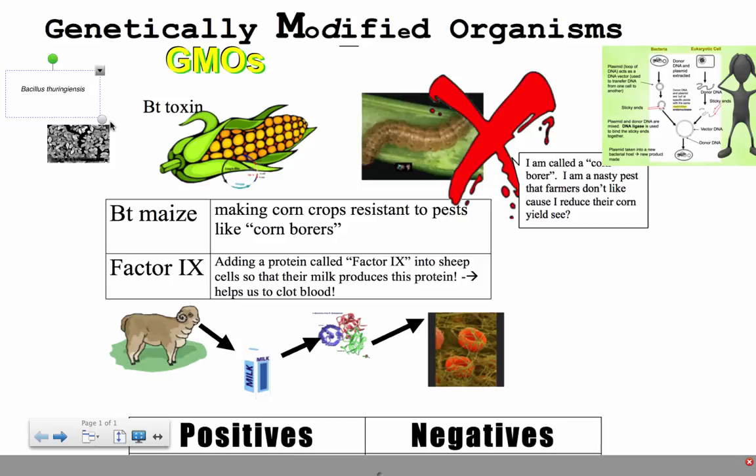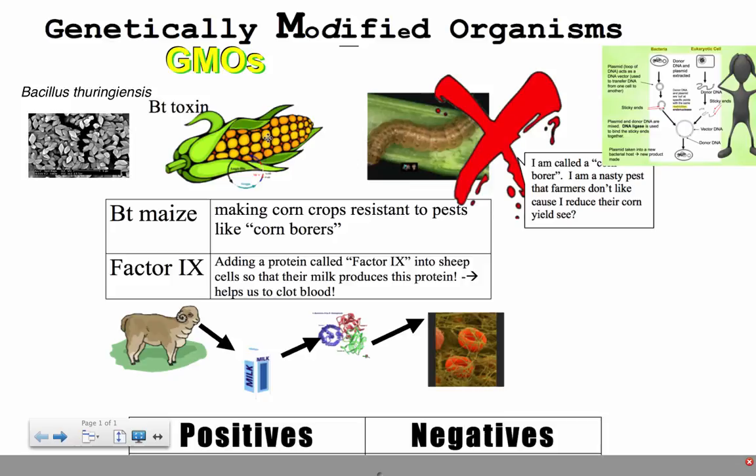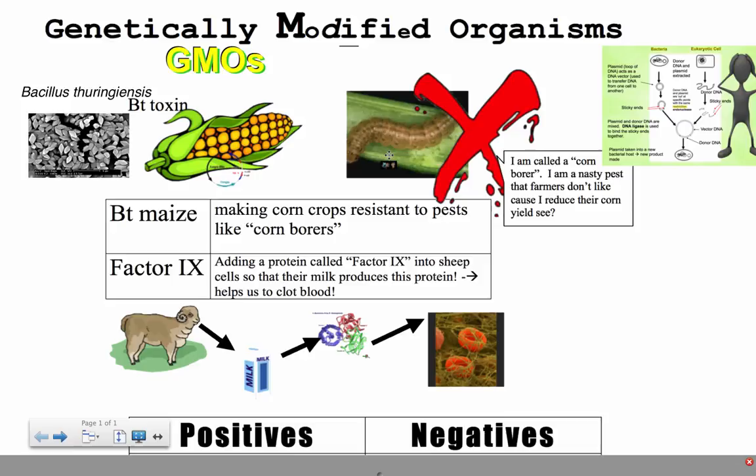Here's a picture of some of the BT spores that are actually produced. What happens is we genetically modify the corn by inserting a gene from bacteria into the corn, and then the corn transcribes and translates that BT toxin gene, producing this toxin which is poisonous to particular pests.